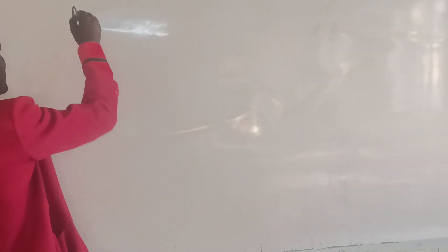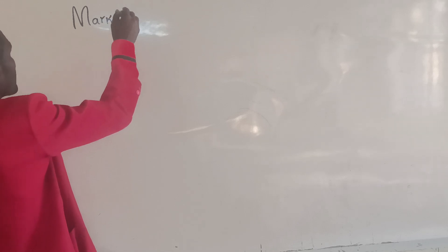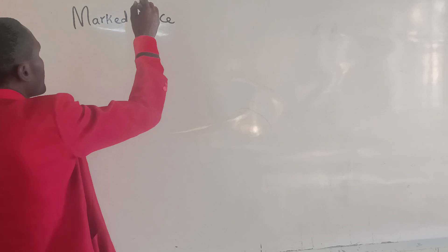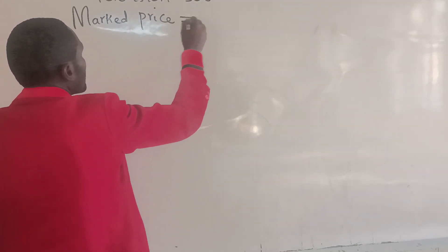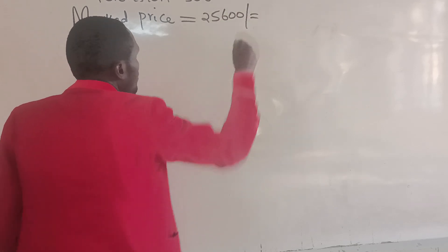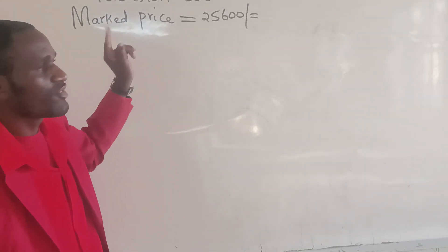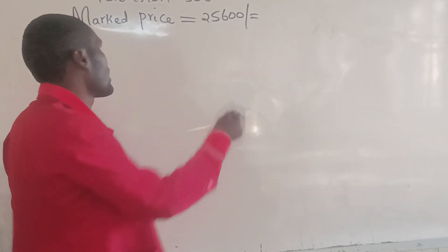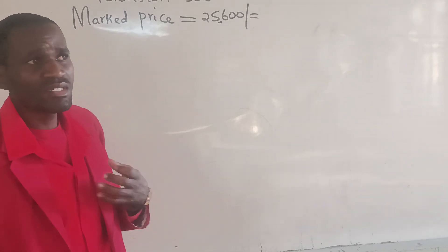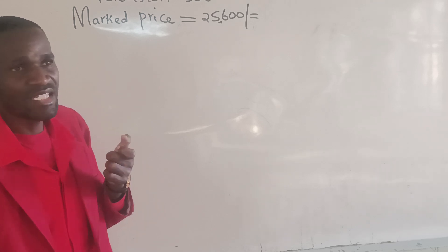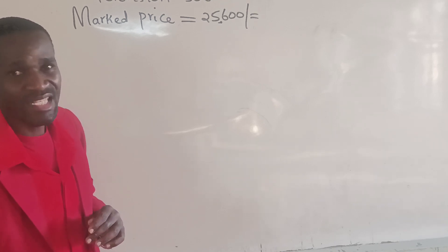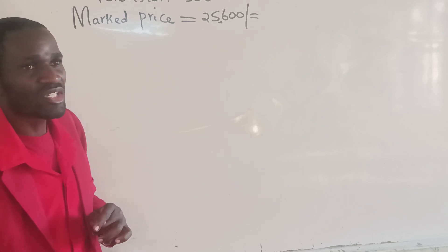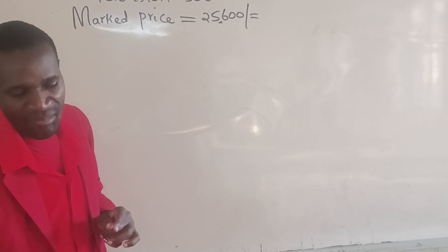So we will begin doing the first question. The marked price of this television set is 25,600 Kenyan shillings. If I go to this business centre, I am going to find this television set marked at 25,600 Kenyan shillings. As a customer, a particular percentage will get deducted from this marked price. You are told that you are given a 5% discount.